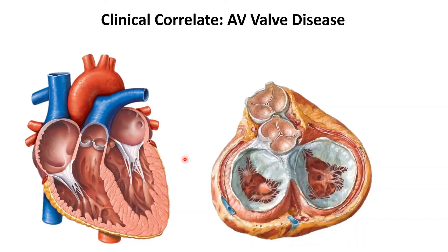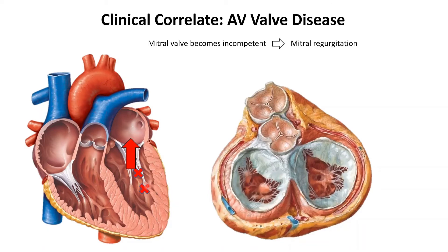Now let's look at the clinical aspects of the heart valves. The papillary muscles or the chordae tendineae can get damaged. If the mitral valve becomes incompetent it will allow blood to flow back from the ventricles into the atria — a situation called mitral regurgitation. Regurgitation means backflow, and this will produce an abnormal sound on auscultation called a murmur.